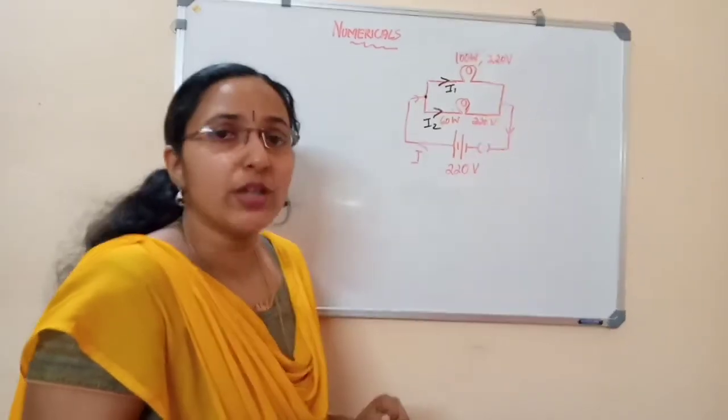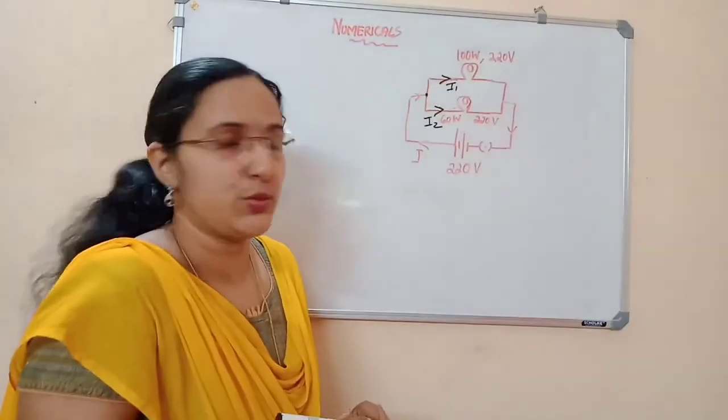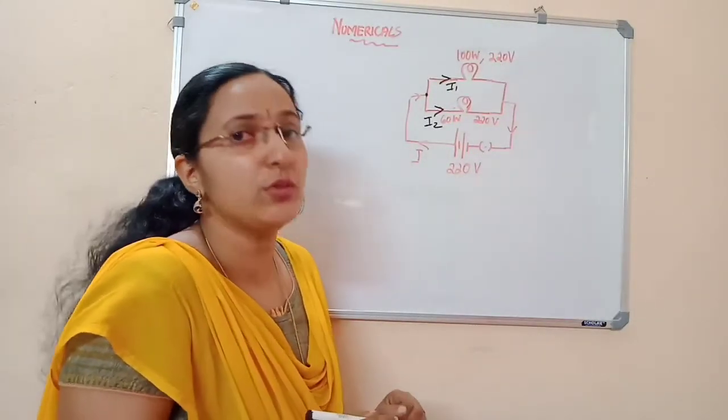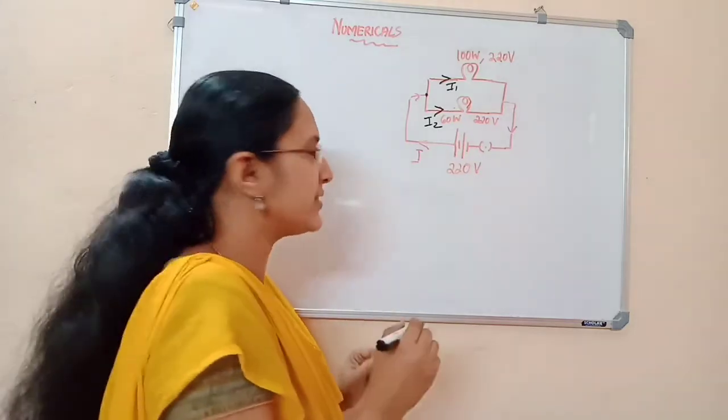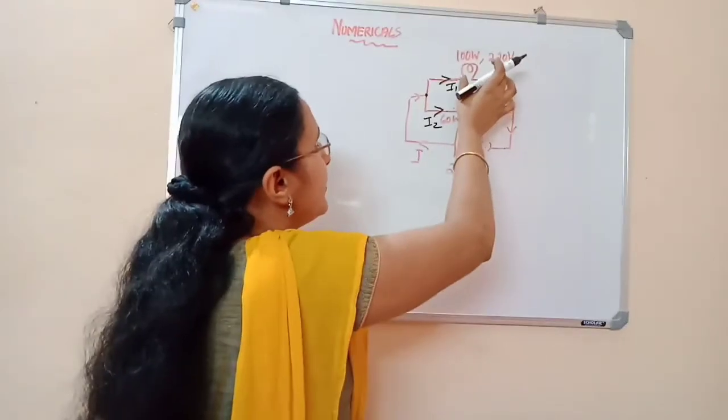The current through the 100 watt bulb is i1, and the current through the 60 watt bulb is i2. So we have to find out i1 and i2. It's very easy to find out i1 and i2.